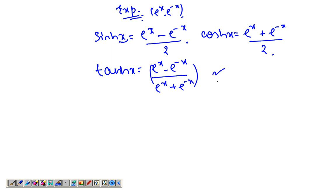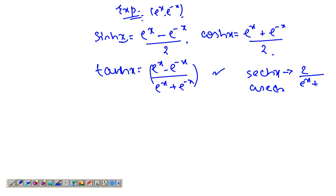You can also define sech(x), csch(x), and coth(x). These would be expressed similarly — you just take 1 over cosh, sinh, and tanh respectively. So the basic formulae are just the same.